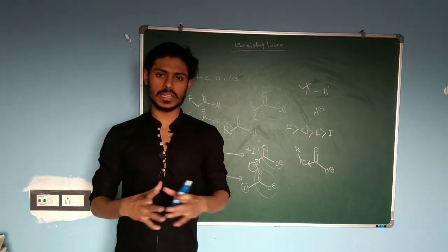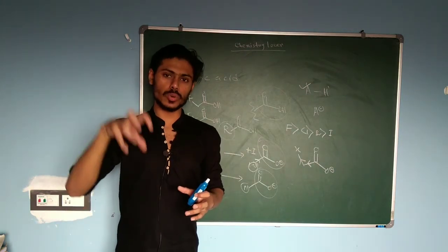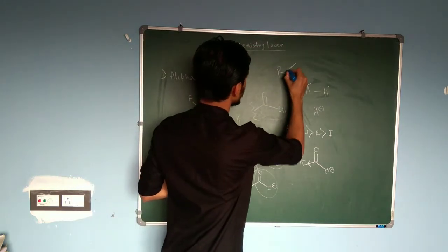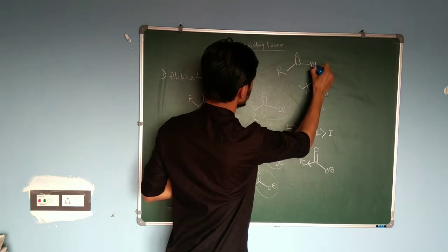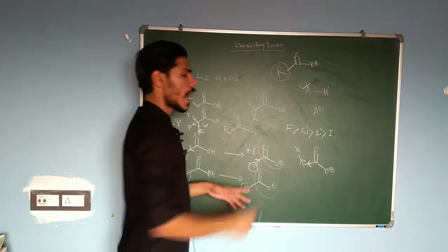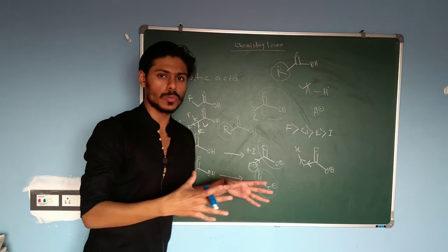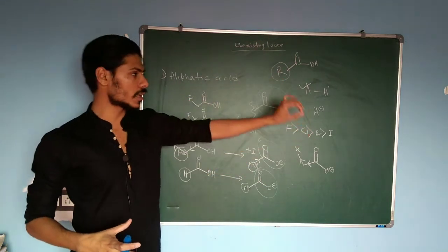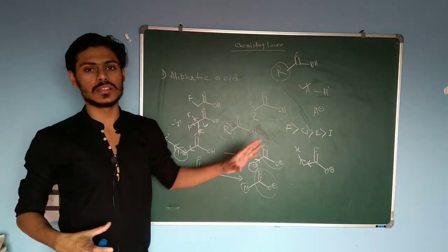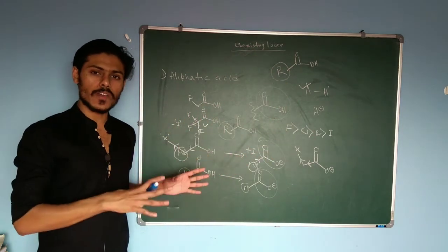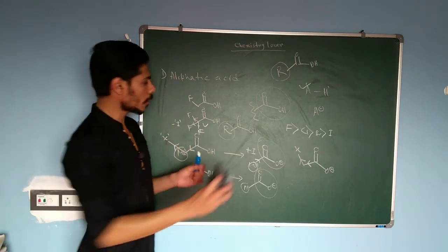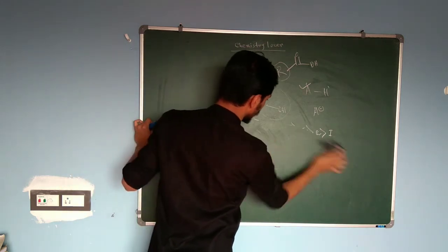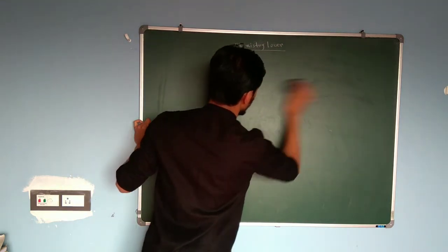To summarize aliphatic carboxylic acids: if we introduce an electron-donating group into the R group, acidity generally decreases; if we introduce an electron-withdrawing group, acidity increases.